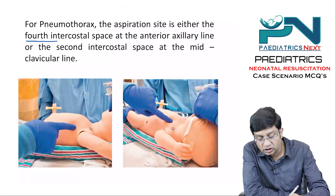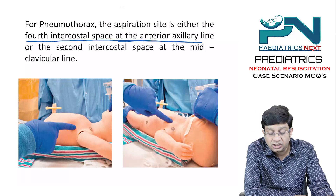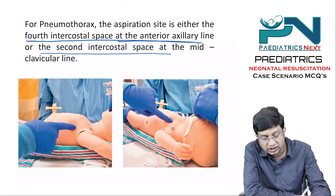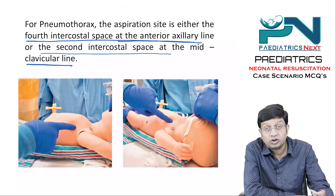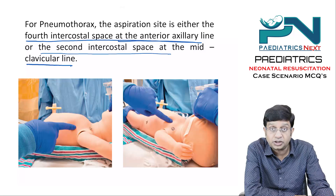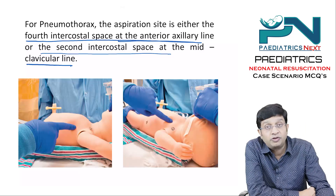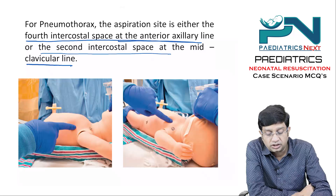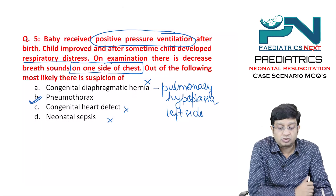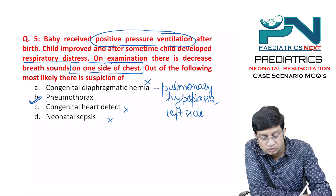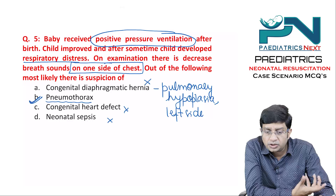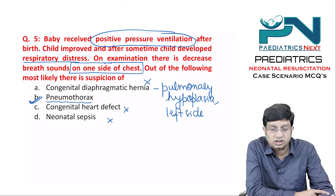For suspected pneumothorax, aspiration should be performed at the fourth intercostal space at the anterior axillary line, or the second intercostal space at the mid-clavicular line. These are the key landmarks to remember for pneumothorax management in the neonate. The most likely diagnosis in this clinical scenario is pneumothorax.